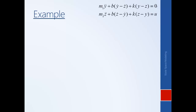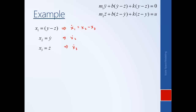Here again are our governing equations and the set of state variables generated by determining where energy is stored in the system. Let's rewrite these equations in state space form. We start by writing a differential equation for each of the state variables. X1-dot is simply y-dot minus z-dot, where y-dot is X2 and z-dot is X3. So that's our first state equation.